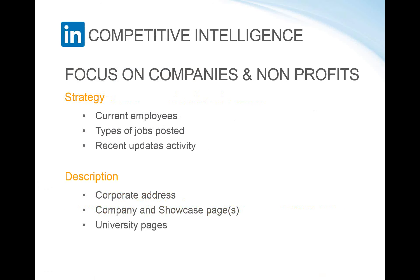Now let's look at what competitive intelligence information we can gather on companies and nonprofits. The first area is strategy. LinkedIn may reveal insight into a company's strategy based on current employees' profiles, messages, shares, or group activity discussing the company. We can also gather strategy information from the types of jobs being posted — you can see where positions will be located, where they're planning to expand, whether they're looking at another country, or whether they're contracting. We can also find information about the company's recent updates: what blogs they're posting and how people are reacting.